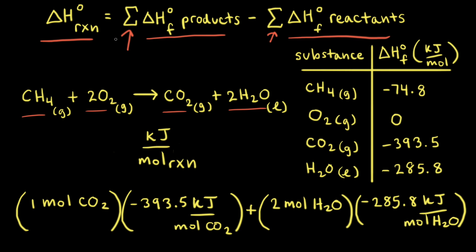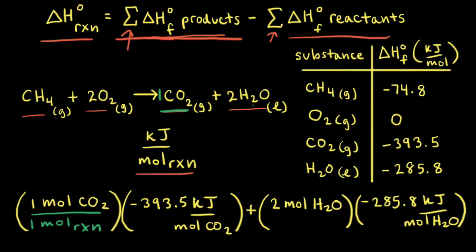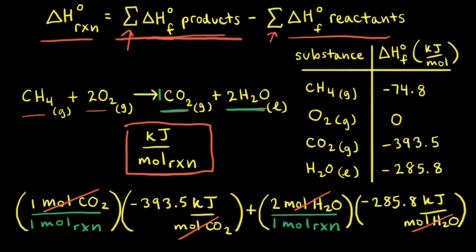Let's go back to the step where we summed the standard enthalpies of formation of the products to see how we can get kilojoules per mole of reaction as our units. To do this, we use a conversion factor. For how the equation is written, we're producing one mole of carbon dioxide, so the conversion factor is one mole of carbon dioxide per one mole of reaction. Similarly, we're forming two moles of water, so the conversion factor is two moles of water per one mole of reaction. Moles of carbon dioxide and moles of water cancel out, giving us kilojoules per mole of reaction. It's more time consuming to write out all the units this way, so often it's faster to do it the first way and add in these units at the end.